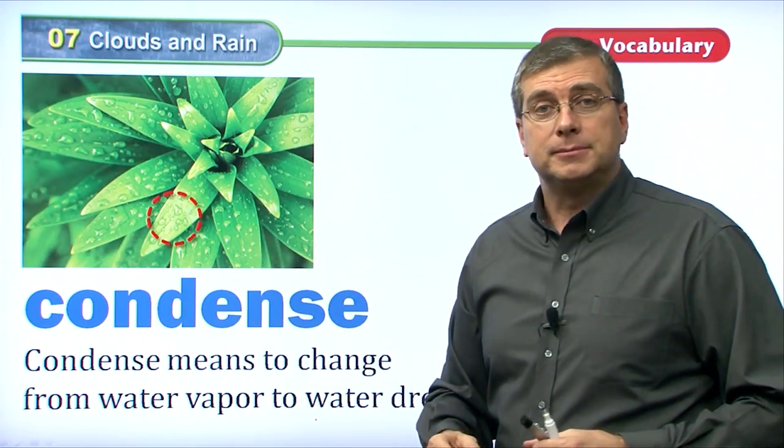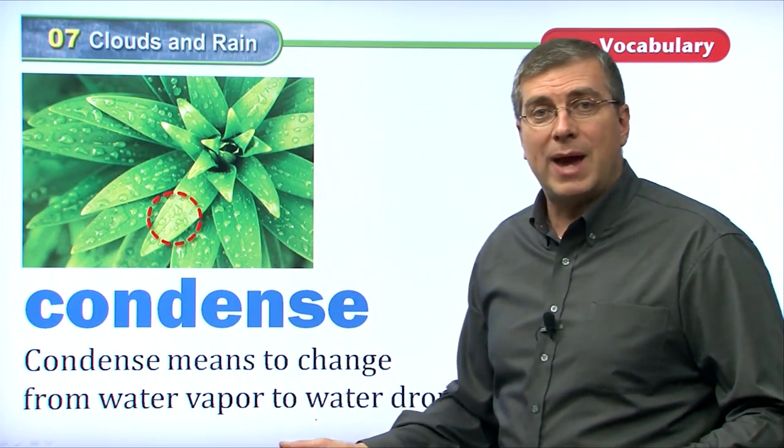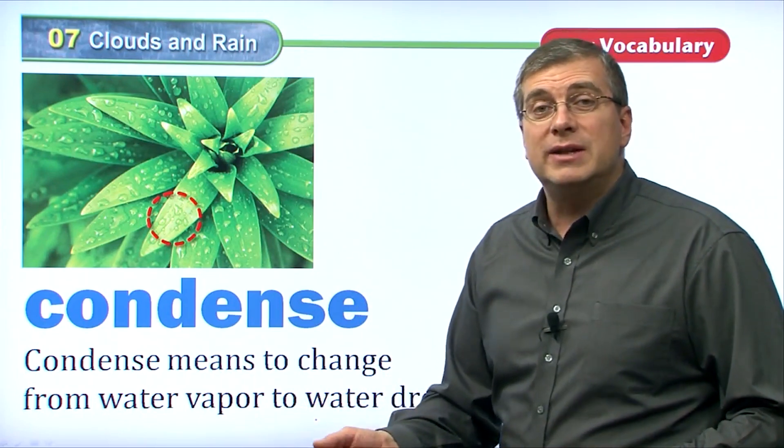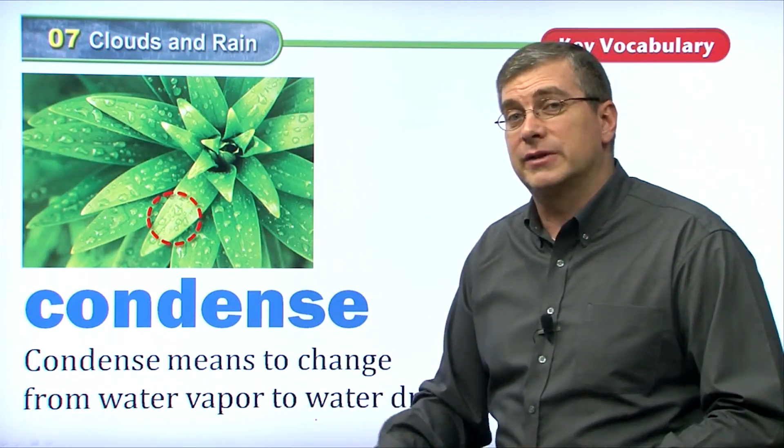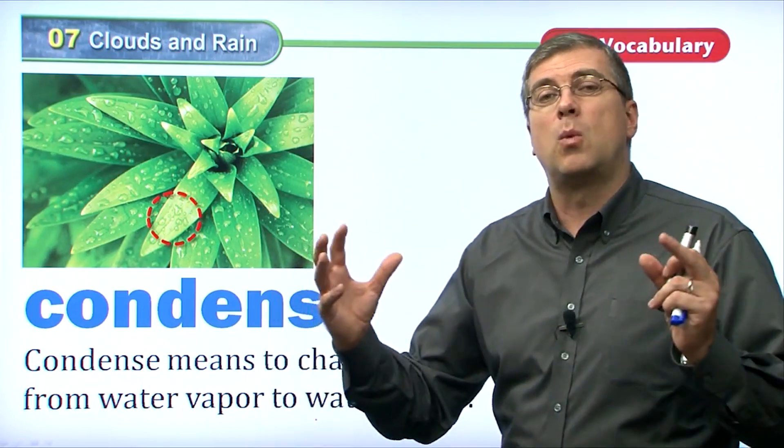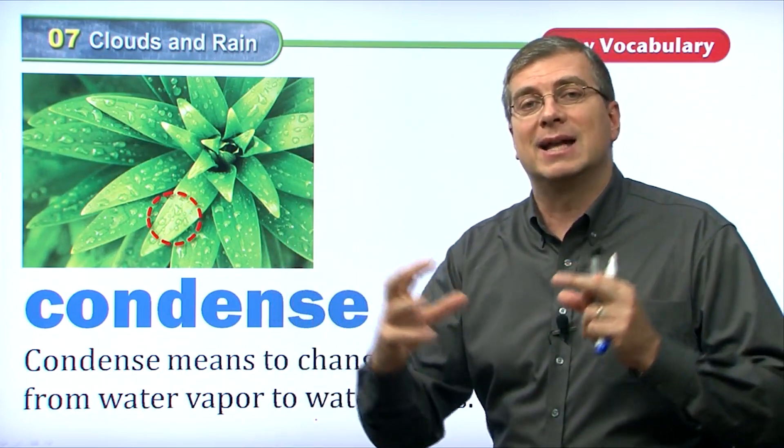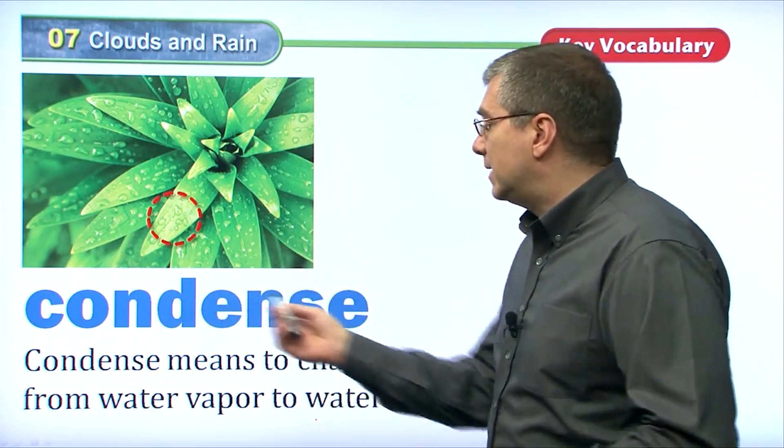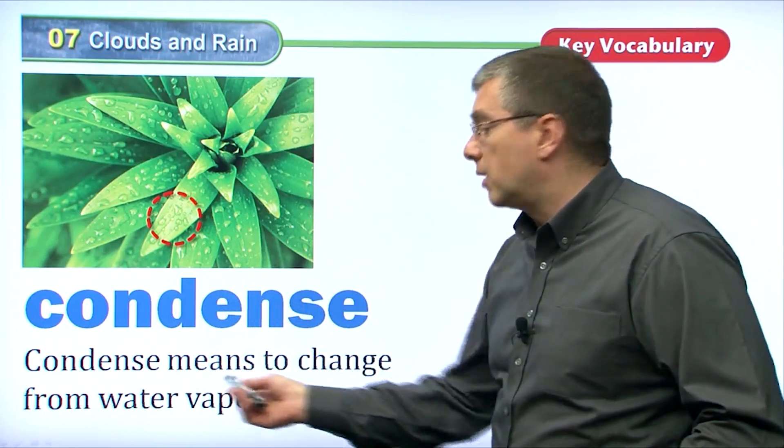If you go out in the morning, you might say, wow, the ground's wet. The leaves of the trees are wet. The leaves and the grass are wet. It didn't rain last night. Why is it wet? Because the water in the air condensed, came together.